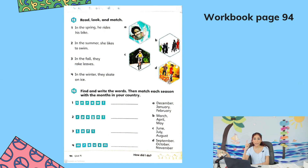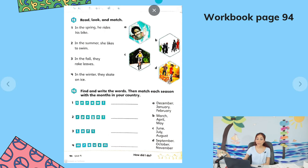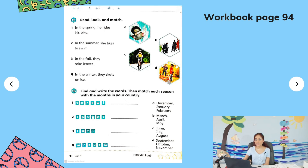We need to do one page — the last page — workbook page 94. We have two activities. Activity 15 says 'Look and match.' We have sentences one to four: number one, 'In the spring, he rides his bike'; number two, 'In the summer, he likes to swim'; number three, 'In the fall, they rake leaves'; number four, 'In the winter, they skate on ice.' We have pictures labeled A, B, C, and D.